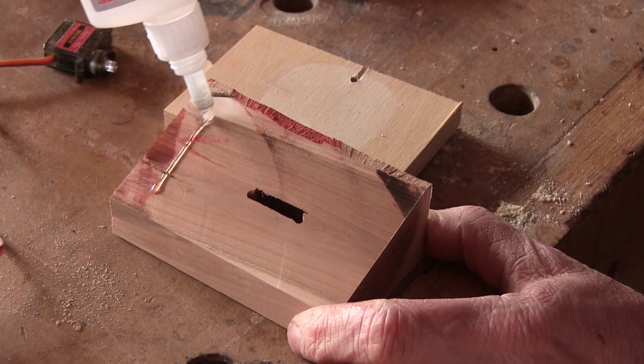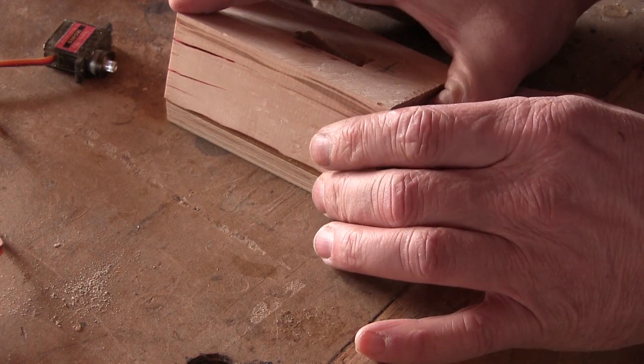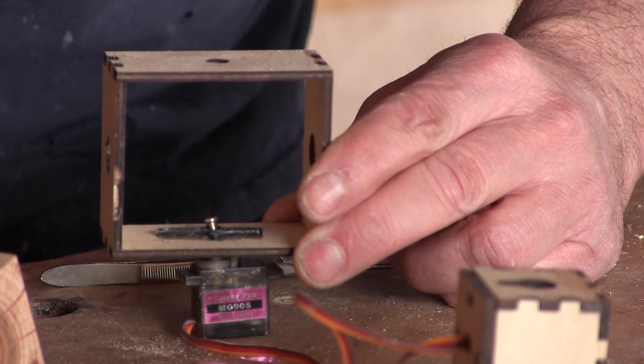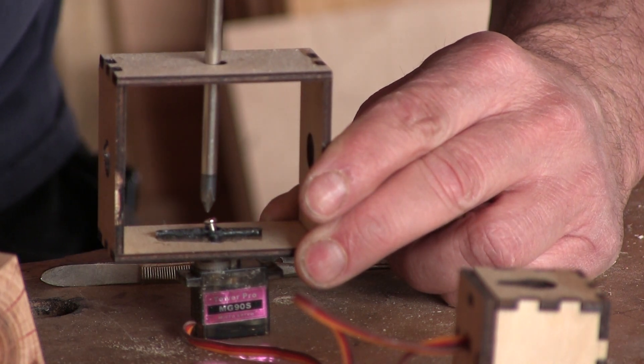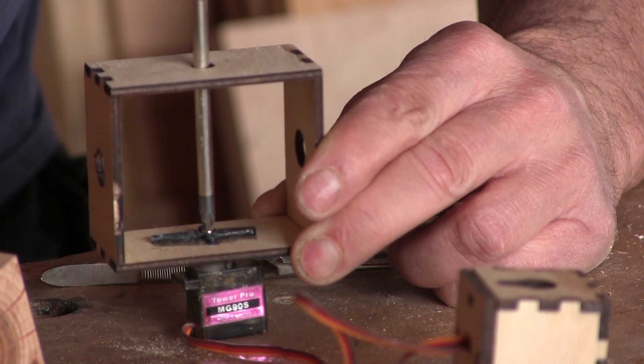The last thing to glue is the block that I cut earlier. I don't want to wait, so I use instant glue again. Now I can assemble it all. First, I screw the servo to the piece I've glued. It's quite easy. I made a hole on the other side for the screwdriver.